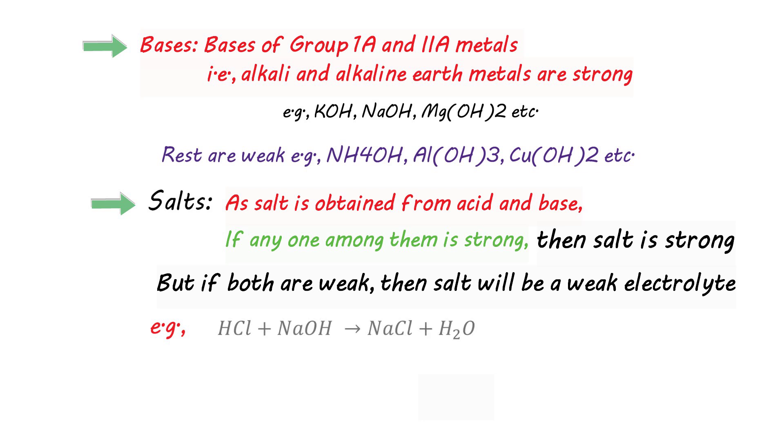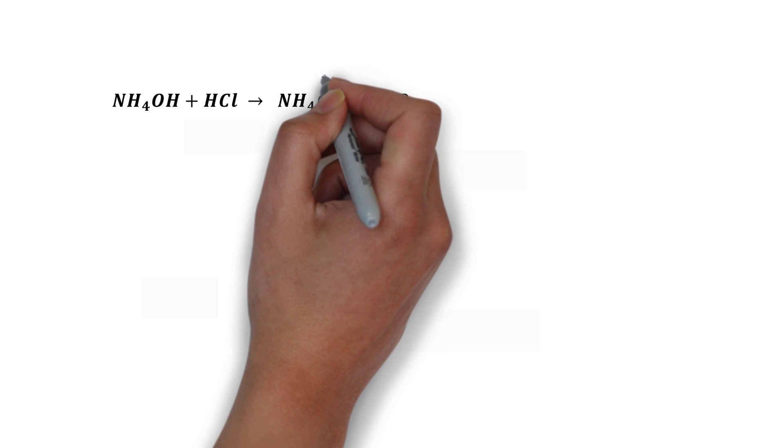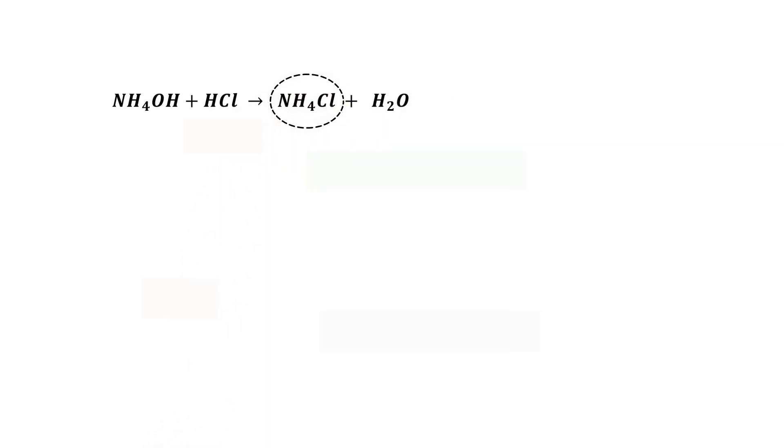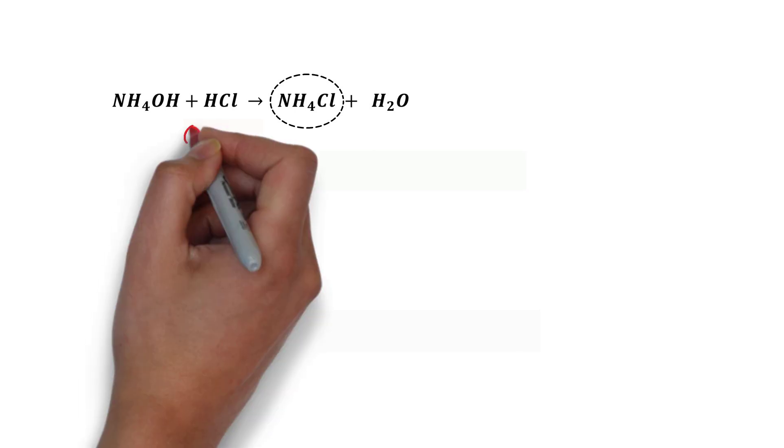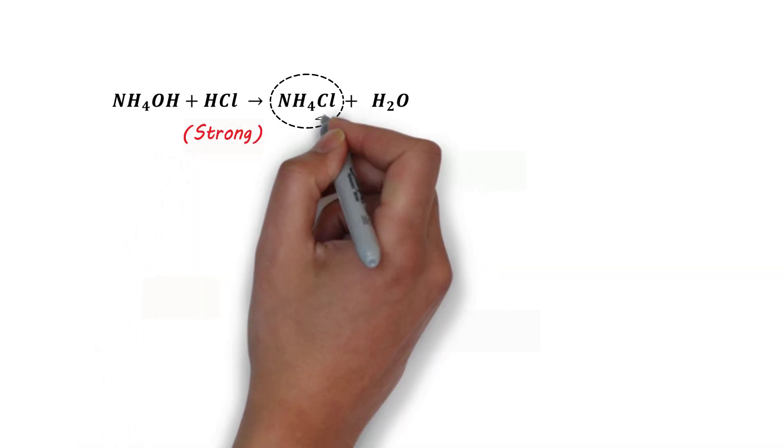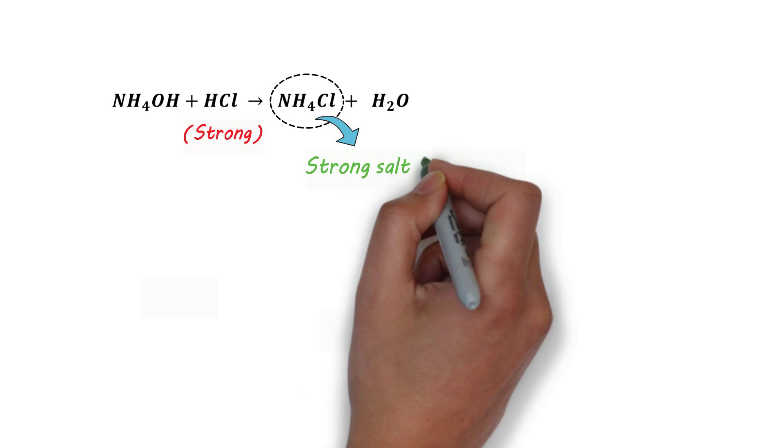For example, in this case, sodium chloride is obtained from hydrochloric acid and sodium hydroxide, which are both very strong, hence it's a strong salt. Similarly, ammonium chloride, as it's obtained from ammonium hydroxide and hydrochloric acid, ammonium hydroxide is weak, but hydrochloric acid is strong. So, ammonium chloride is a strong salt or electrolyte.